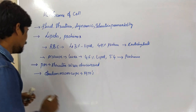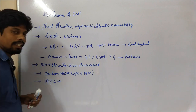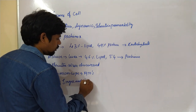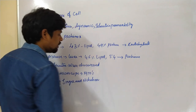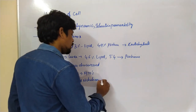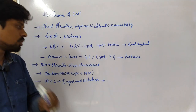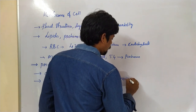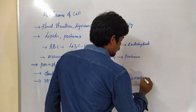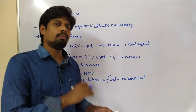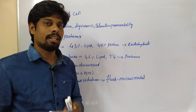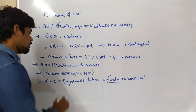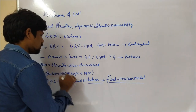Finally in 1972, Singer and Nicolson observed the plasma membrane under the electron microscope and postulated a model called the Fluid Mosaic Model. Before this model, many other models were postulated by scientists, but in the present situation we accept the Fluid Mosaic Model postulated by Singer and Nicolson.